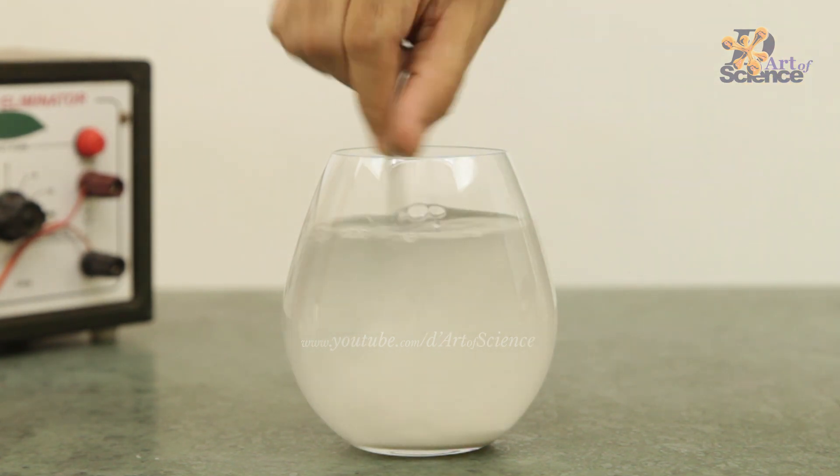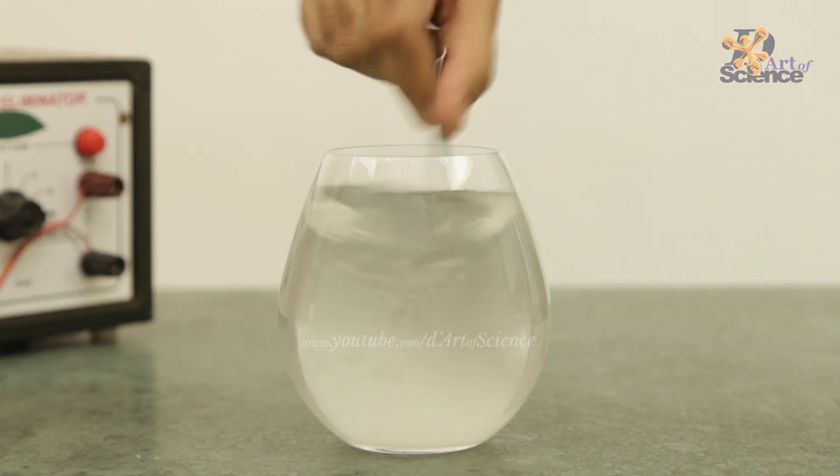Mix two or three spoonfuls of baking soda in the distilled water to make it a good conductor of electricity.